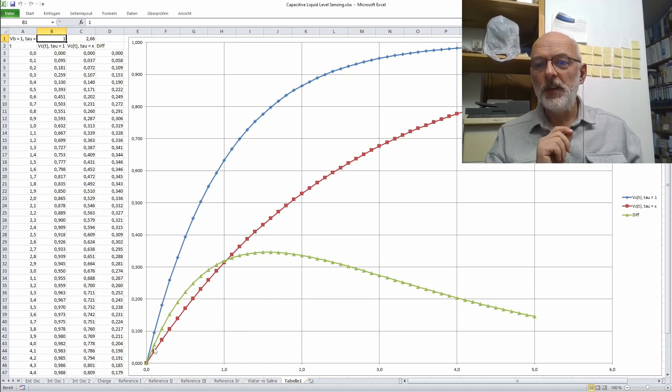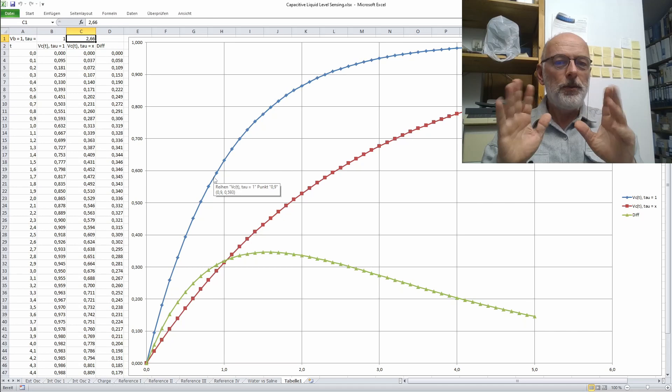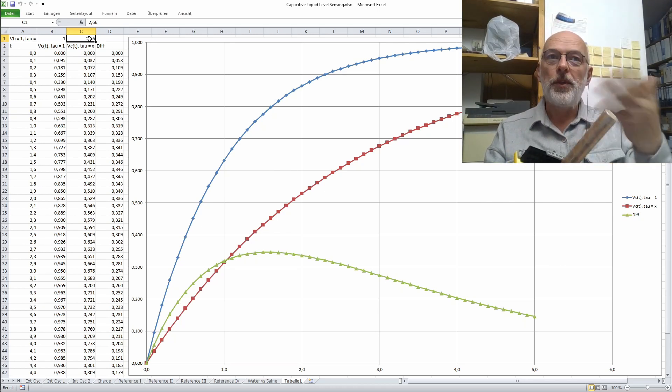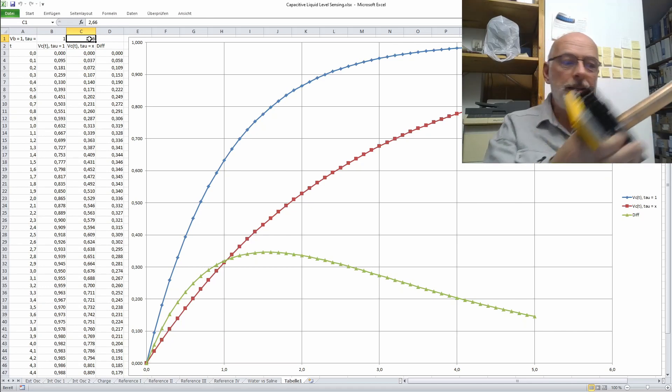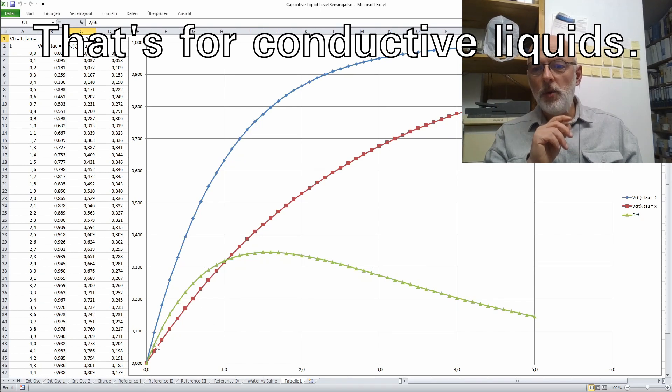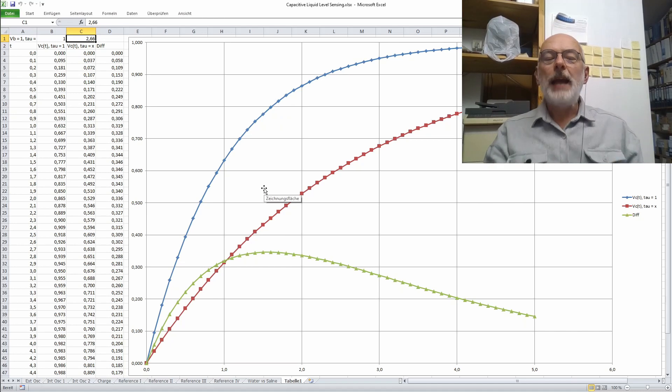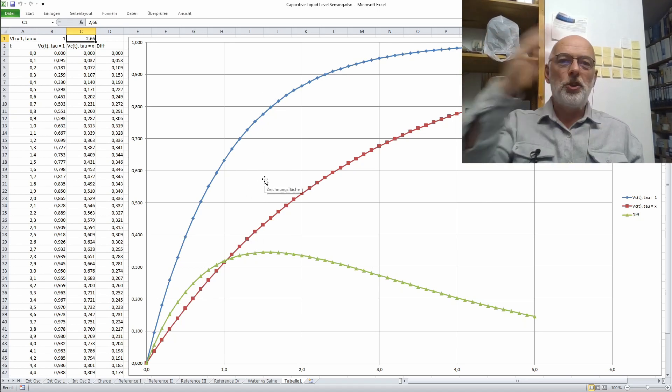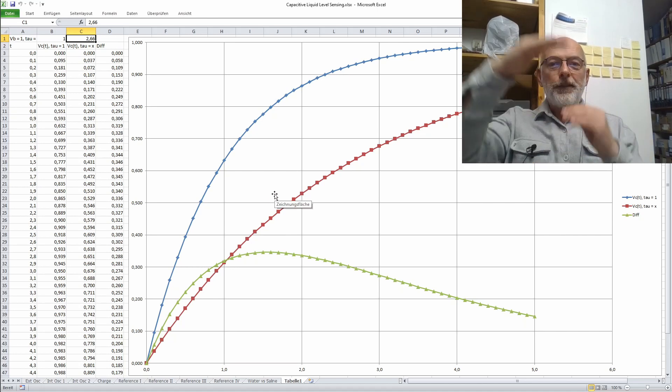But there is another consideration. I have here an Excel showing two RC circuit charge curves. The blue here for a tau of 1 and the red for a tau of 2.66. What's important is that the relation from 1 to 2.66 is the same change in tau our sensor had from dry about 30 picofarads to completely wetted about 80 picofarads. The green line here is the difference between the two charge curves.